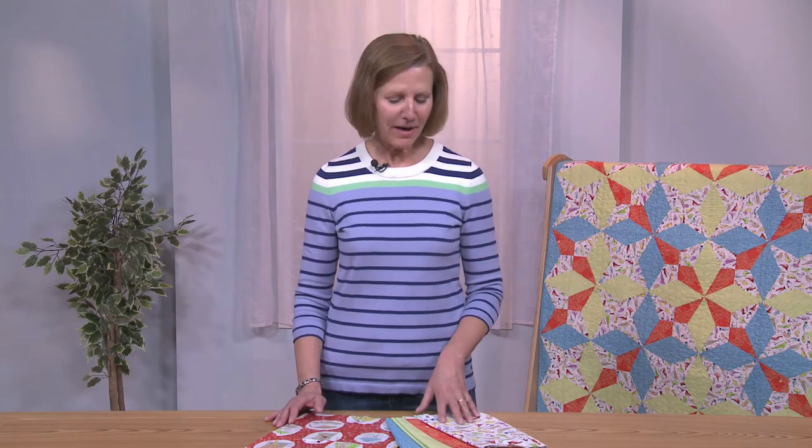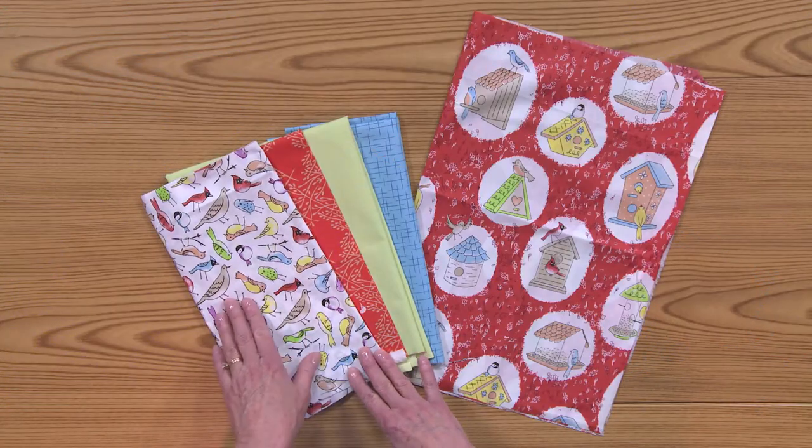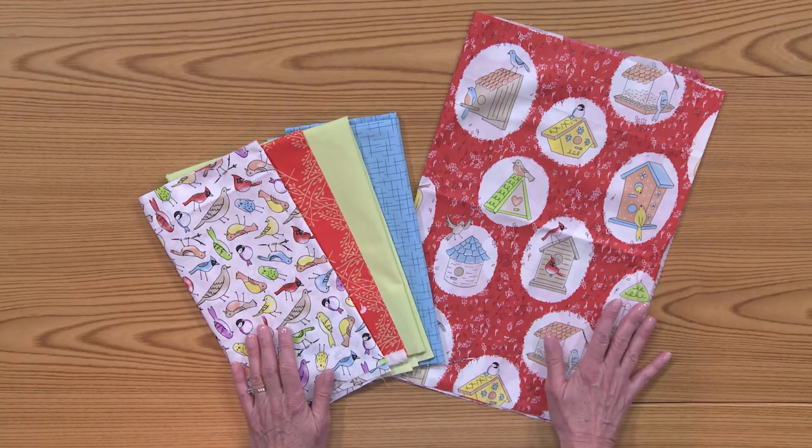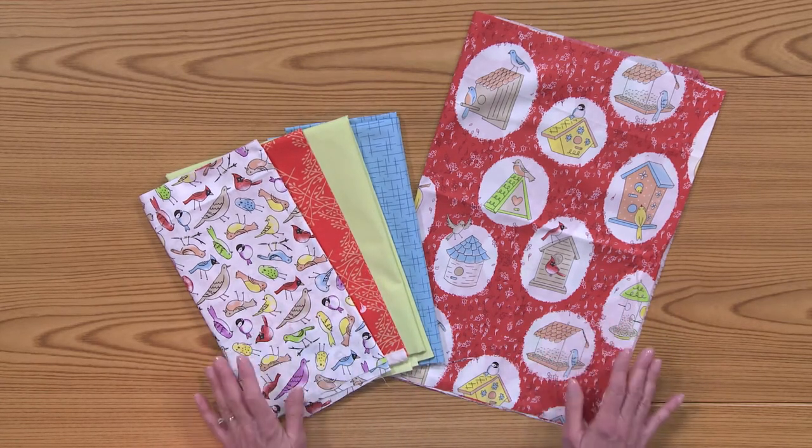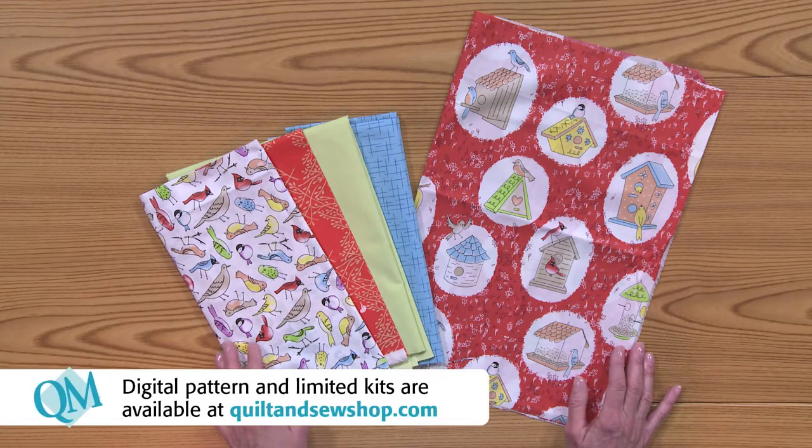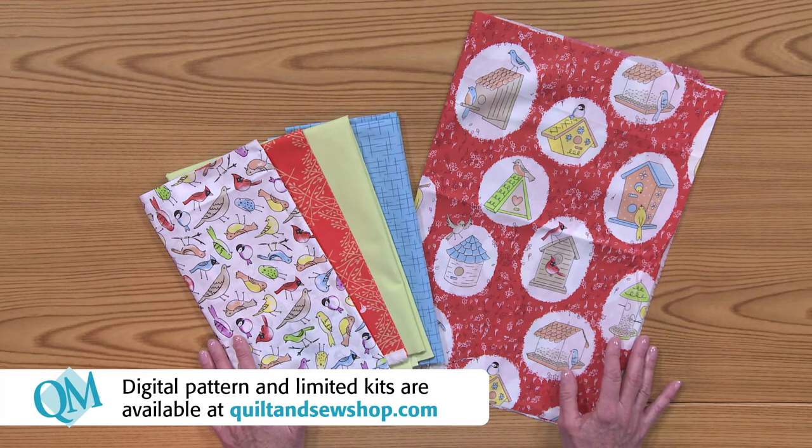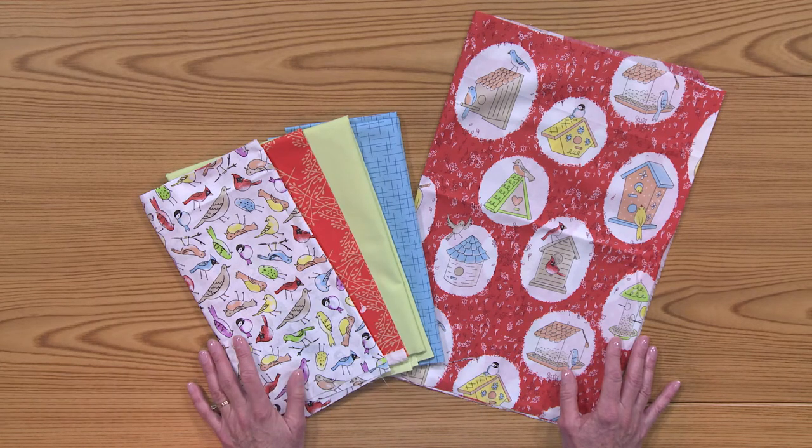It's a darling crib quilt that features foundation piecing and uses only four fabrics. The fabrics we chose include this fun novelty print, three additional fabrics, and then we have this really cute fabric on the back. If you like these fabrics, you can find a kit for the quilt top and a kit for the backing along with the digital pattern at quiltandsewshop.com.